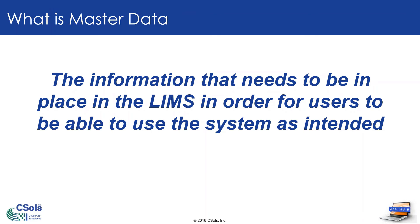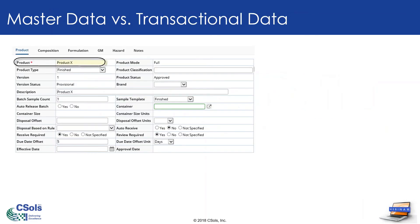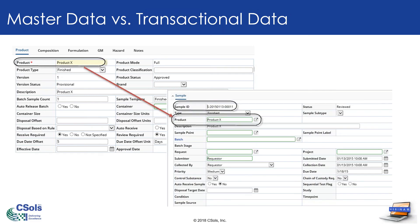There's also another type of data that exists in LIMS systems, and that is transactional data, or dynamic data as some people call it. Transactional data is the data that users enter as part of their daily activities in the system, such as test results or new batches of a product. The relationship between master data and transactional data is shown here — in the top left panel there is a piece of master data for a product called Product X, which defines all the metadata about this product such as the product type. In the lower right panel I'm showing a piece of transactional data — in this case a sample that has been logged into the LIMS as a sample of Product X. The only way this piece of transactional data could be created in the LIMS by a user is if the master data for the product already exists in the system.